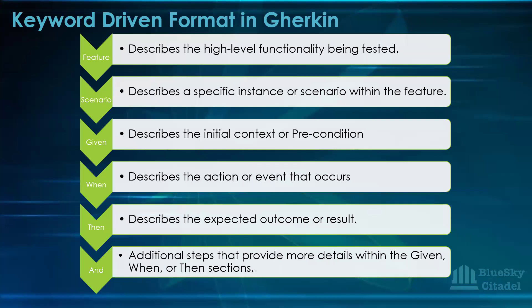Another keyword in Gherkin is And — used to describe additional steps providing more detail within the given/when/then scenarios. Instead of repeating 'given, given, given' or 'when, when, when,' you use And to replace subsequent occurrences. For example: 'Given I am a user and I am on the landing page and I press on login' — instead of saying 'given, given, given.' This ensures clarity and avoids unnecessary repetition, and it provides more detail to each step.